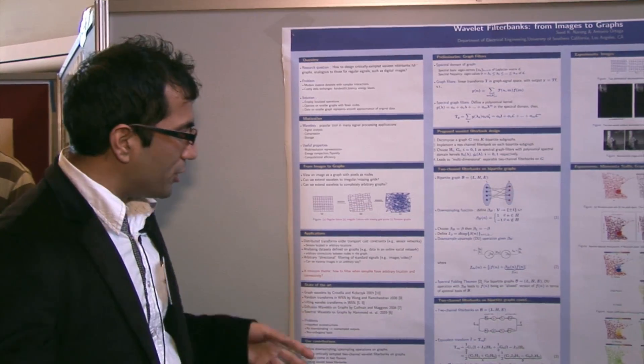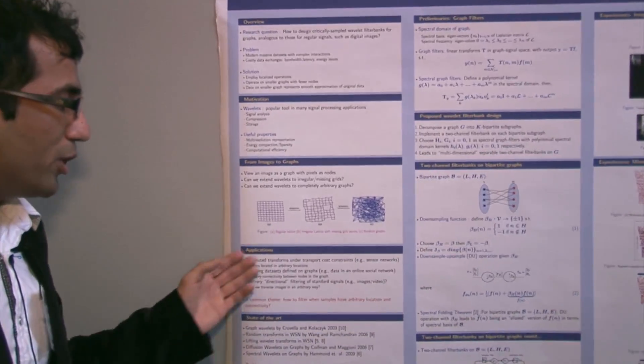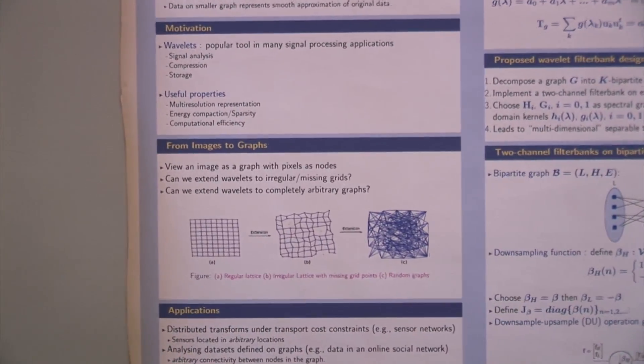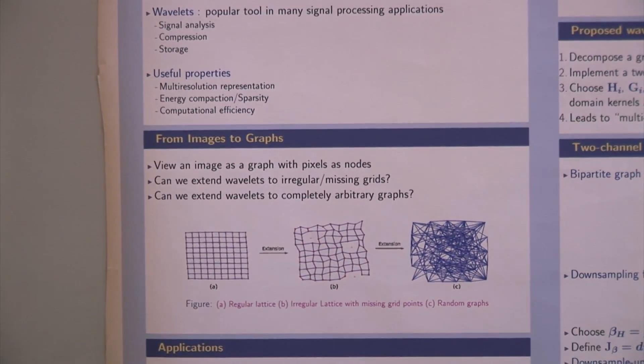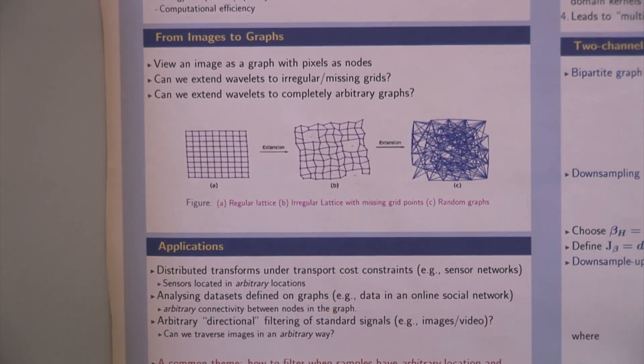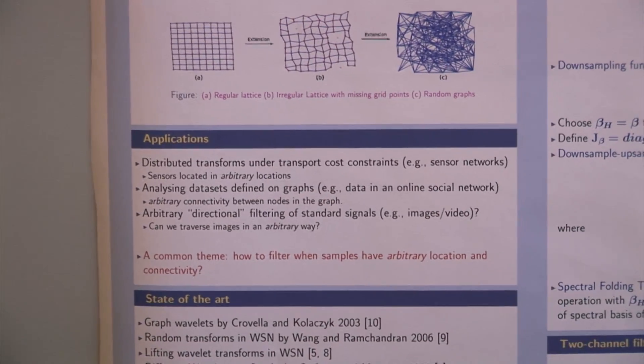The applications for our work is distributed transform under transport cost constraints. For example, sensors in a wireless sensor network hold some data and we would like to analyze them using wavelets. Then analyzing data sets defined on graphs, for example, online social networks.